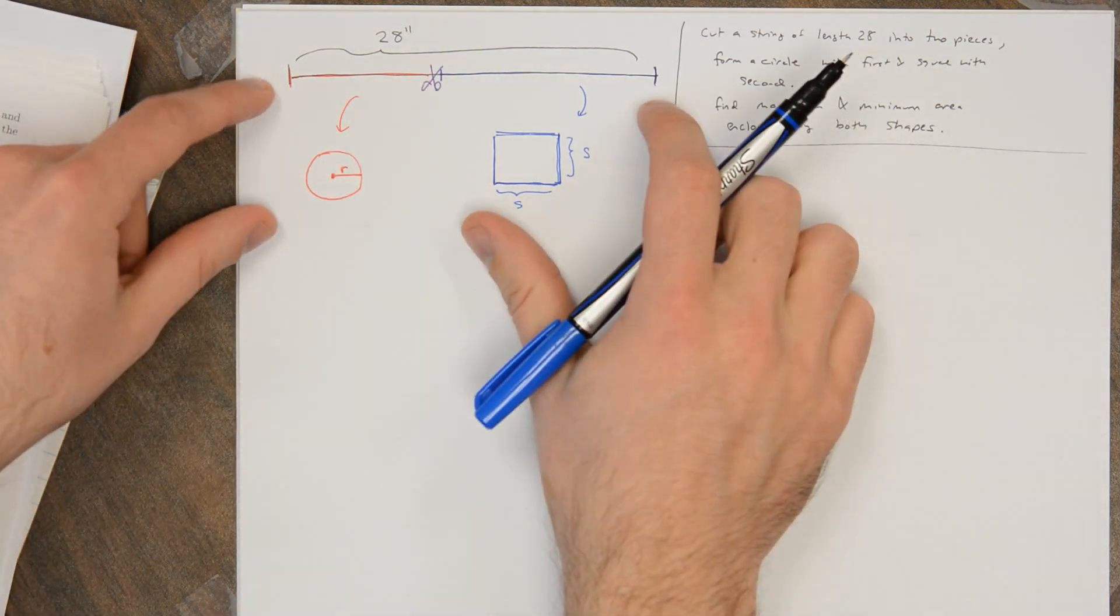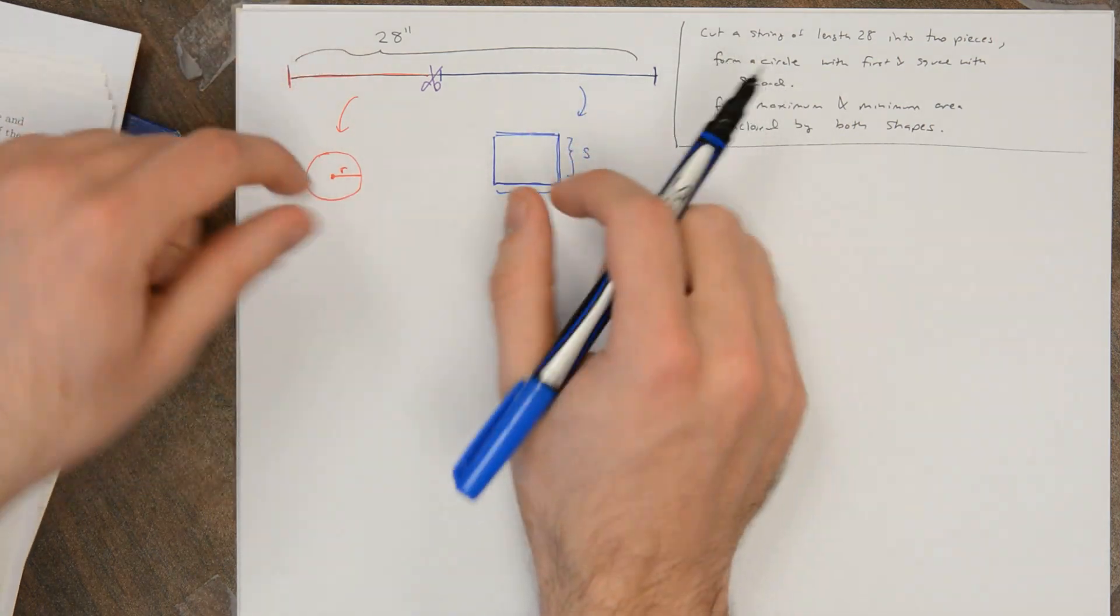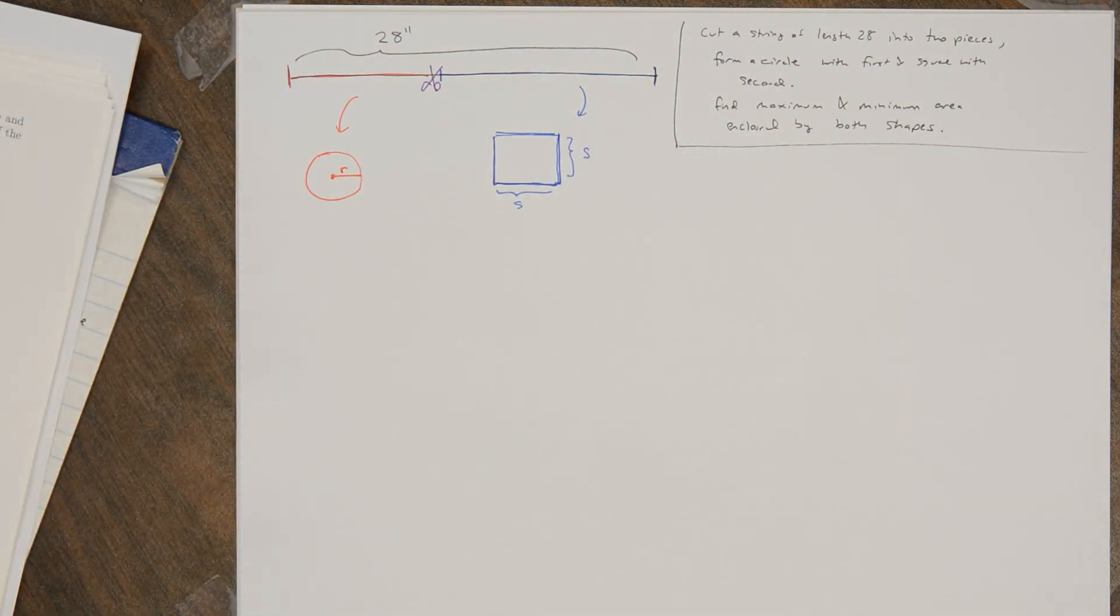If I use the whole thing for the square I'm going to get one huge square. If I use the whole thing for the circle I'm going to get one huge circle. And somewhere in between lots of different things can happen.